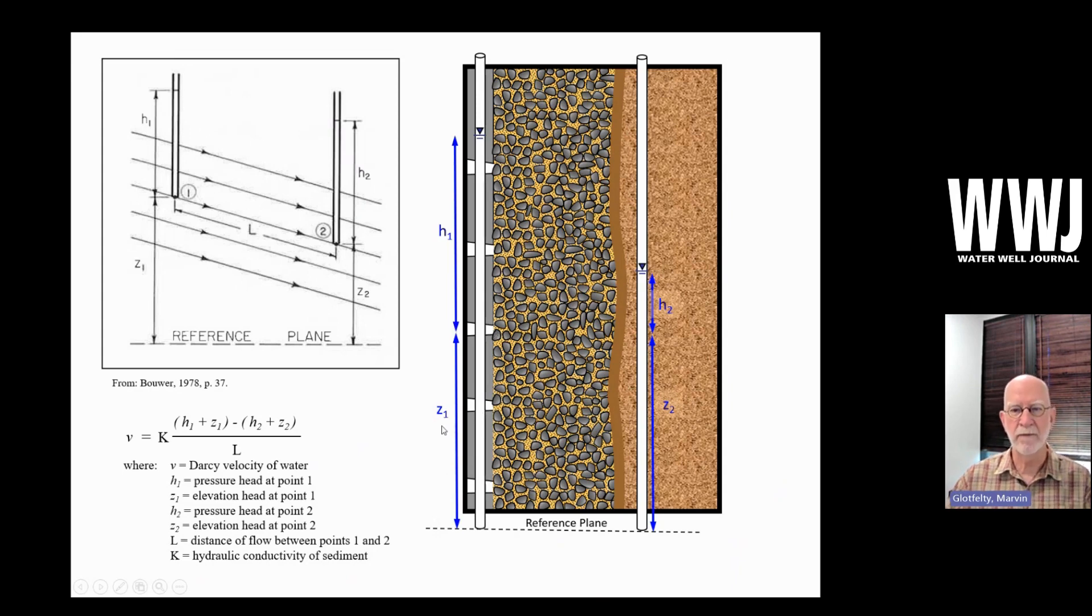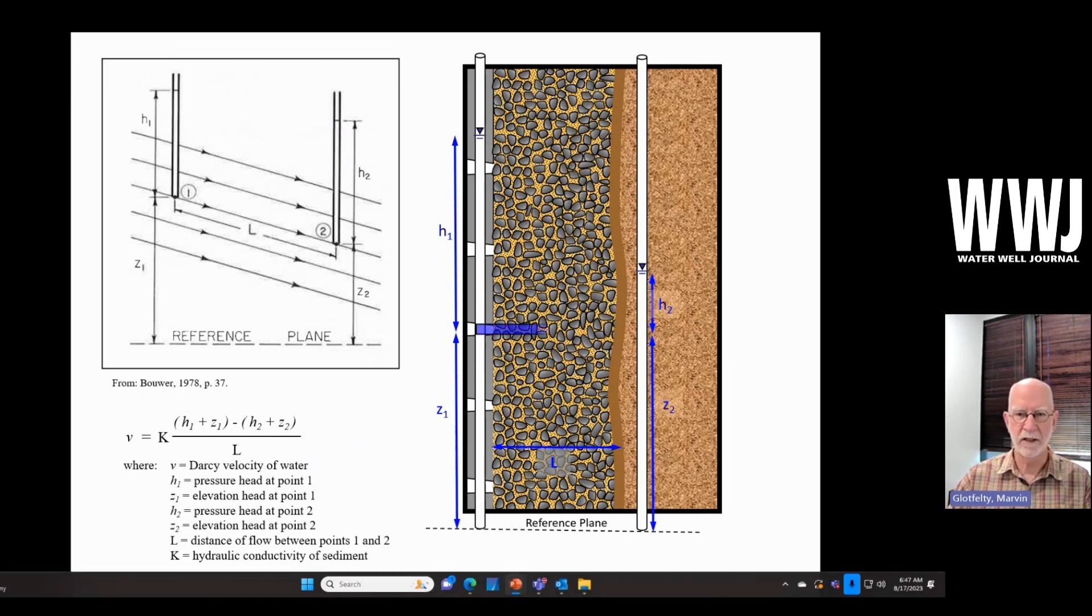But in this case, Dr. Bauer showed us Z's being different with the heads being the same. We have the opposite. We have the pressure heads being higher and lower with our elevations being the same. Same result though. We have higher pressure on the inside and lower pressure on the outside of the filter pack. And that's moving across a horizontal line L. So we're looking at gradient along a pathway from the inside of the well where we're developing energy moving to the borehole face.